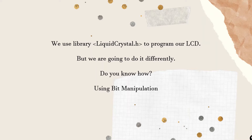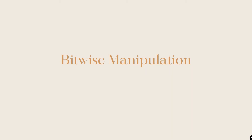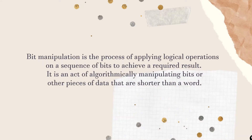Let's see what bit manipulation is and how it can be implemented using some bitwise operators. Bit manipulation is the process of applying logical operations on a sequence of bits to achieve a required result. It is an act of algorithmically manipulating bits or other pieces of data shorter than a word. There are different bitwise operations used in bit manipulation, and these bit operations operate on individual bits of the bit packets. Bit operations are fast and can be used in optimizing time complexity.